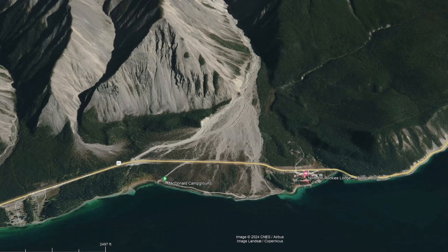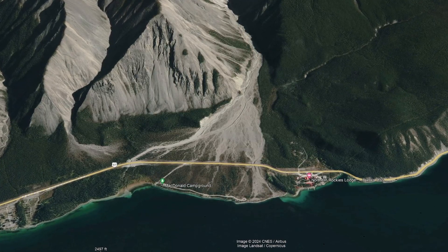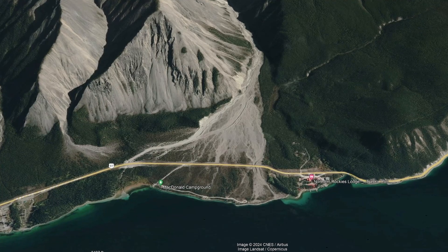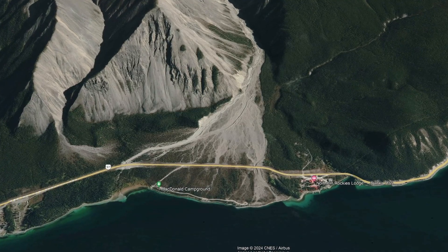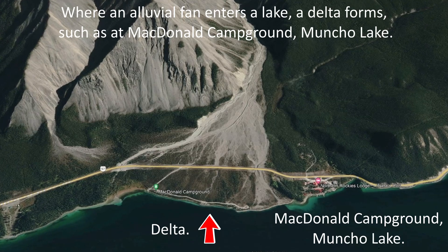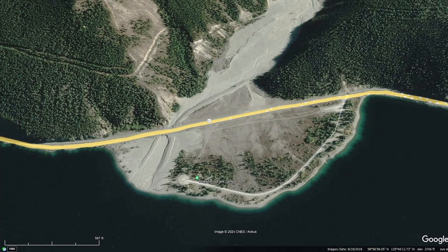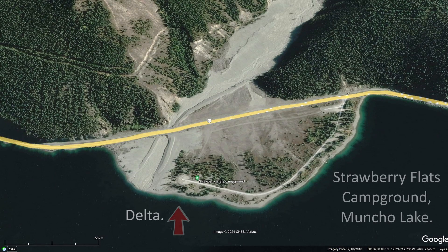Before I close this video, let's jump back to a Google Earth satellite image. Where a rushing river transporting alluvial fan sediment enters a lake — such as Muncho Lake as seen in this image — a delta forms. A delta landform forms where a fast-moving body of water such as a river flows into a standing and relatively still body of water such as a lake or an ocean.